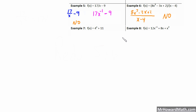Example 7: we have 4 to the x plus 11. We have a variable as an exponent, and our rule states we must have positive integers for our exponents — not variables. So that's out. This is actually an exponential equation, not a polynomial.